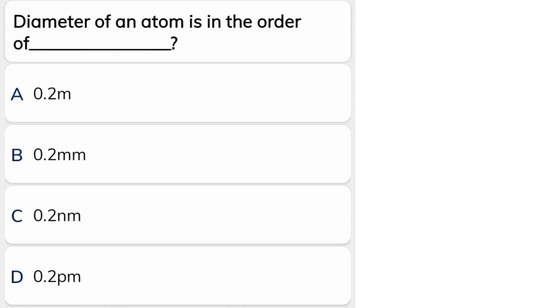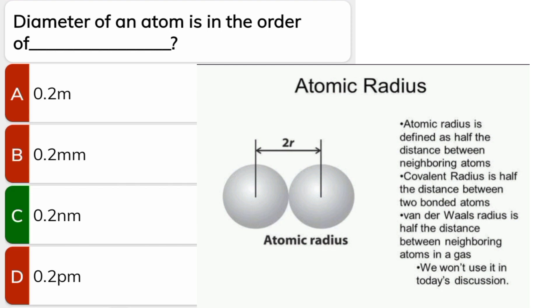Diameter of an atom is in the order of - correct answer is C, 0.2 nanometer.